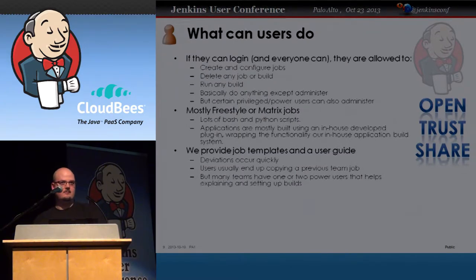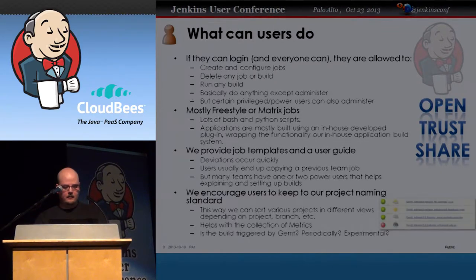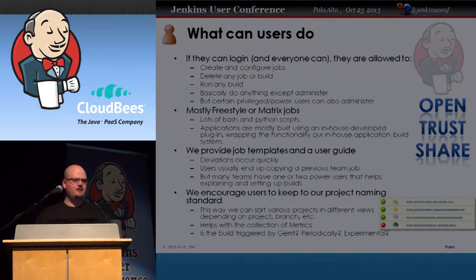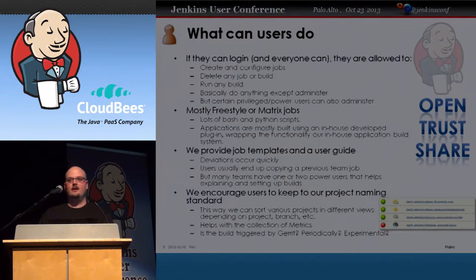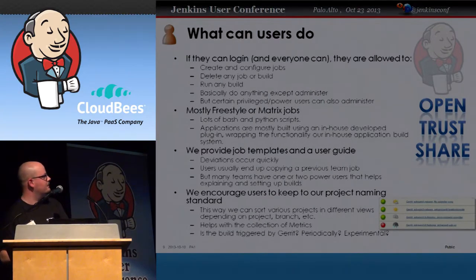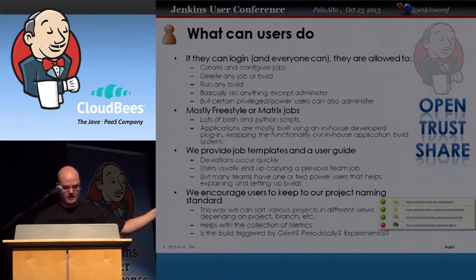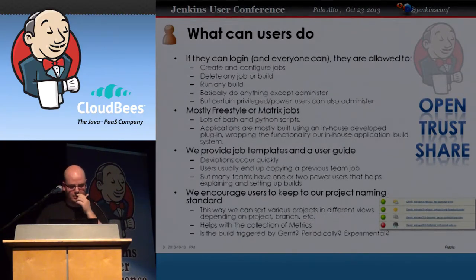Most teams have one or two users doing the Jenkins work. We encourage users to follow a naming standard — we don't enforce it explicitly, but please use this naming convention because it makes it easier to assign views and calculate metrics. For example, jobs are prefixed with 'Gerrit' to indicate they're triggered by Gerrit, then the branch, then the module or application.